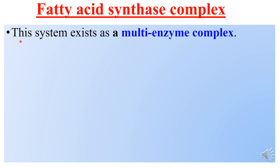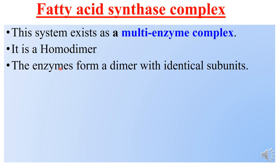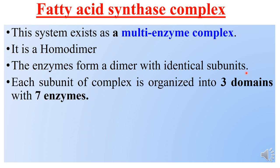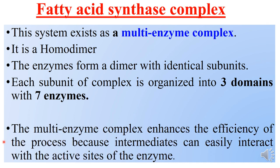The fatty acid synthase system is a multi-enzyme complex and is a homodimer, meaning it is made up of two identical monomeric units — 'homo' meaning same, 'dimer' meaning two. Each subunit of the complex is organized into three domains and contains seven enzymes. They also have one derivative of vitamin B5, that is phosphopantetheine.